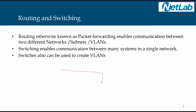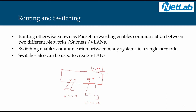We have a single switch which is connected to multiple systems. This can be VLAN 10, and another port here connected to two other systems — these systems belong to VLAN 20. By default, every switch has VLAN 1 configured out of the factory.